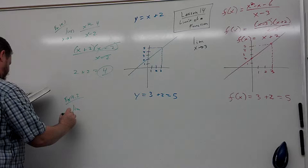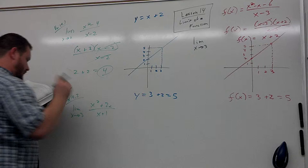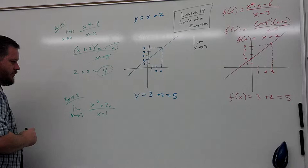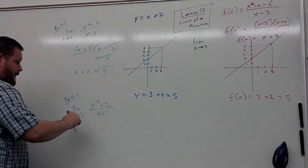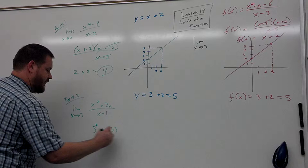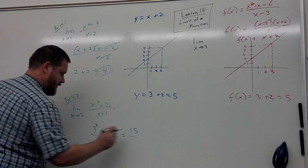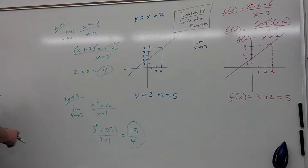Let's try another one. Limit as x approaches 3 of x squared plus 2x over x plus 1. Can I plug in a 3 for the x? Yes. The denominator's going to be 3 plus 1, which is 4. So let's plug in 3. So we got 3 squared plus 2 times 3 over 3 plus 1. 9 plus 6 is 15 over 4.